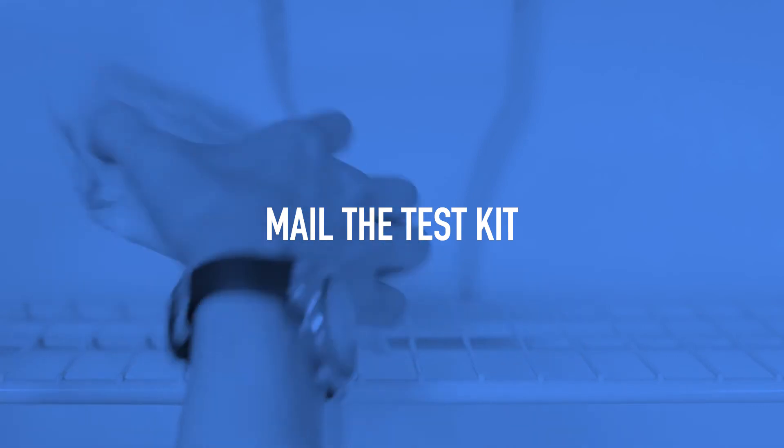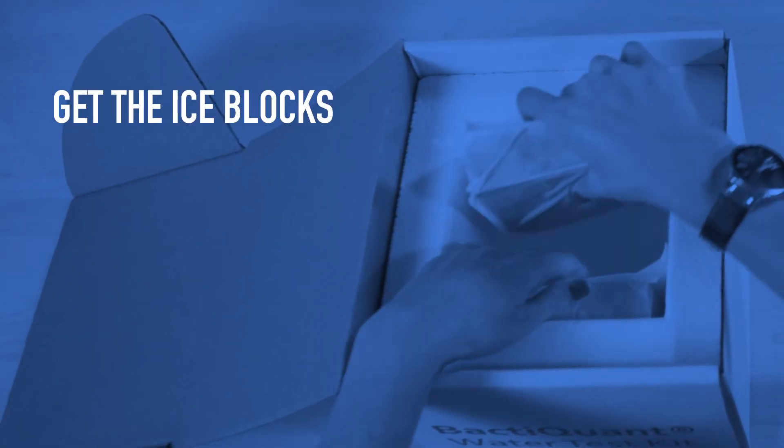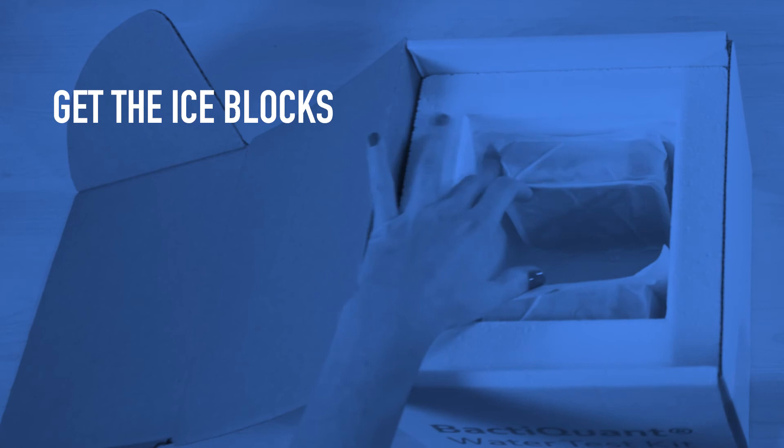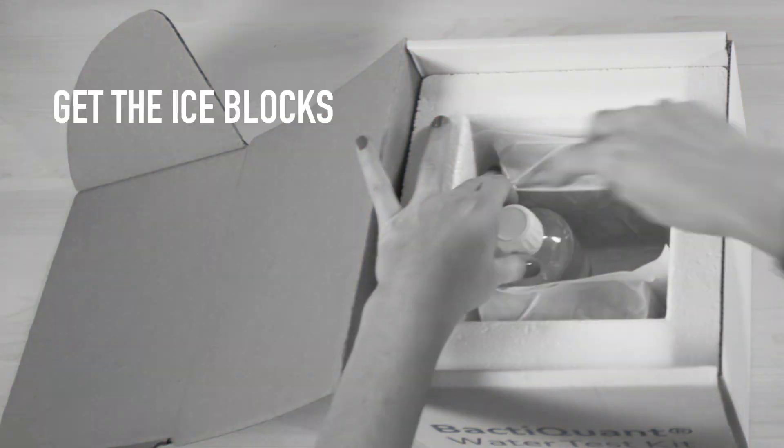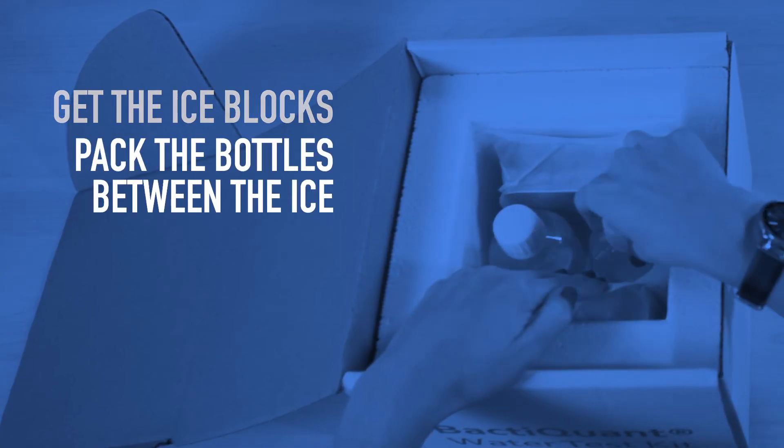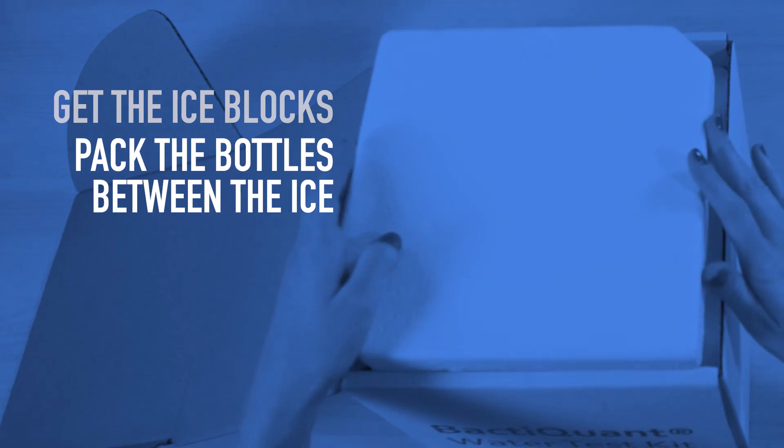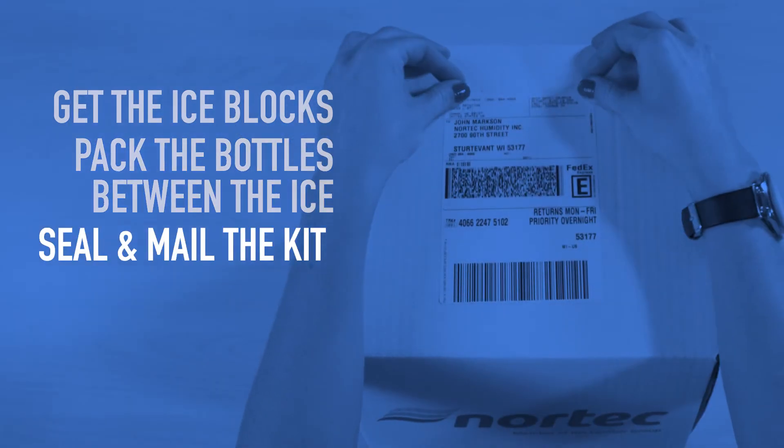Once your water samples are ready for shipping, remove the ice blocks from the freezer and pack them into the styrofoam cooler that's part of your kit's original box. Place the water samples in between the ice blocks and then immediately mail the kit using the shipping label that came with your test kit.